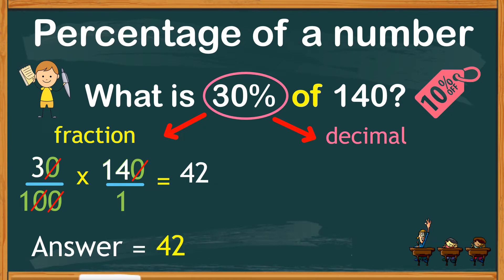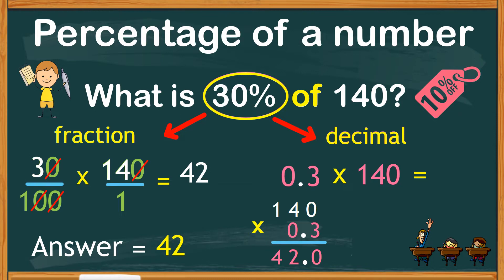Another way to find the percentage of a number is by changing percent into decimal. This other method is much easier, especially when you're using a calculator. Just change 30% into a decimal, which is 0.3, and multiply by 140, and the product is 42.